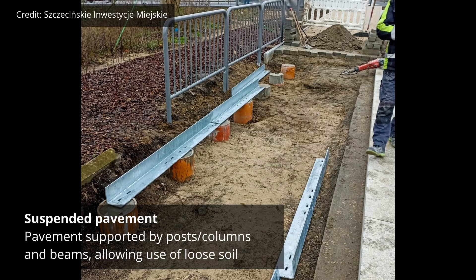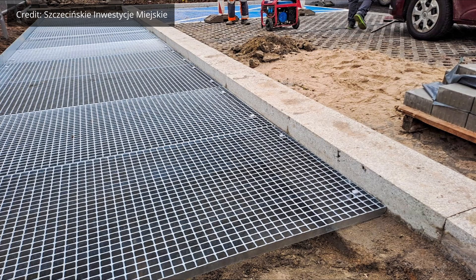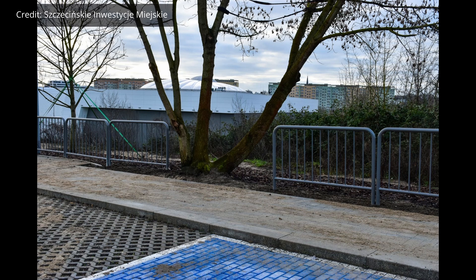The next option is suspended sidewalk or pavement. You have a series of vertical posts or columns with horizontal beams, and this structure supports a deck above it. Since it's the structure doing the support — not the soil — you can use any kind of soil with suspended pavement. The soil is filled in around those columns or posts, and that's what the tree roots grow into. This has to be specifically engineered to support the weight above it, so it can be a significant engineering challenge.